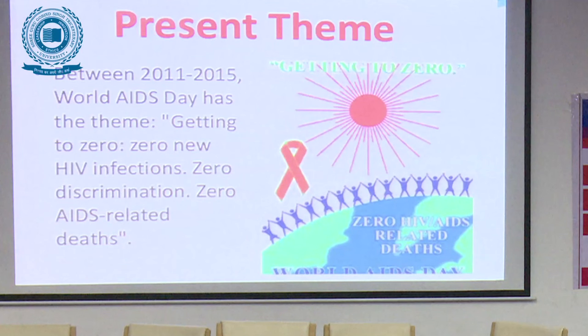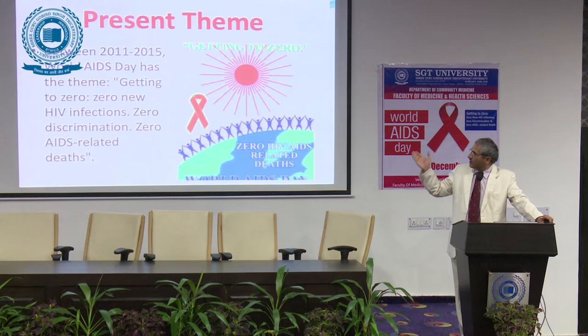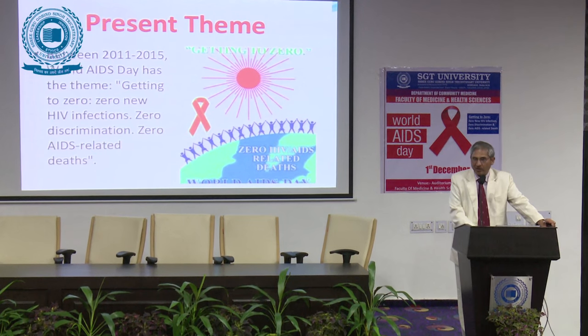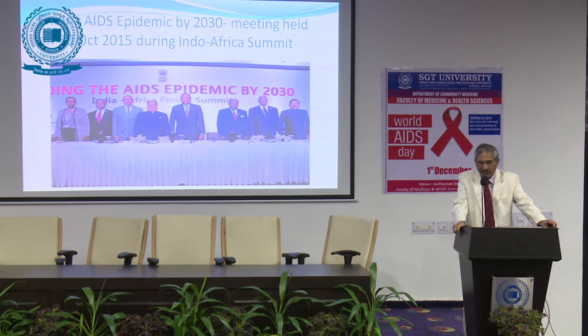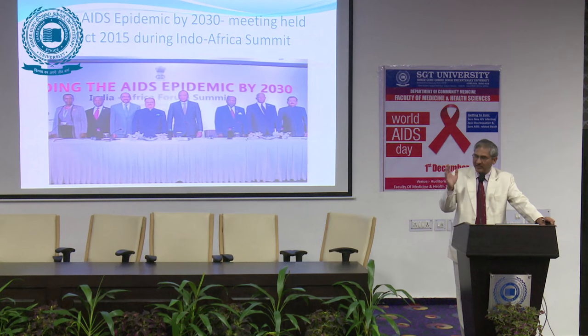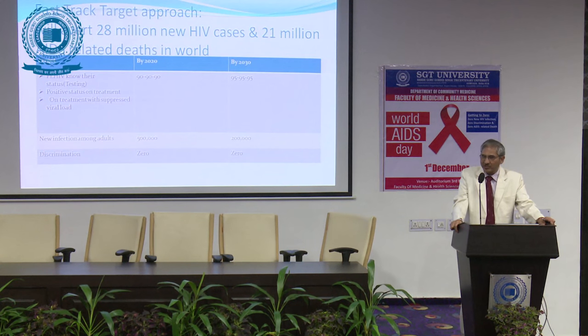Some good news about HIV/AIDS: we may be achieving an AIDS-free generation. From 2011 to 2015, the theme was zero new HIV infections, zero discrimination, and zero AIDS-related deaths. Zero discrimination has largely been achieved in India, but zero new infections and zero deaths have not yet been reached. The UN and government decided on a fast-track action plan to reach an AIDS-free generation, with the 90-90-90 target now set for 2020 rather than 2050.